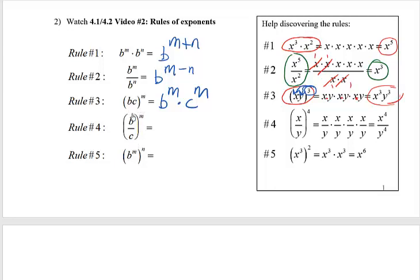Moving on to rule four. This one is similar to rule three, except now instead of multiplication inside my base I have a division problem. I have b divided by c all raised to the m power. This is a very similar result to rule three. You can see the example problem over here, x over y to the fourth. That just means multiply four x over y's together. So I did that. How do you multiply fractions? It's very easy. You just multiply straight across. x, x, x, x makes x to the fourth. y, y, y, y makes y to the fourth.